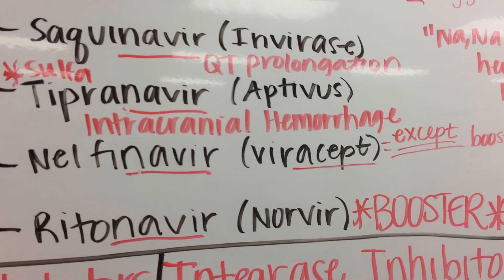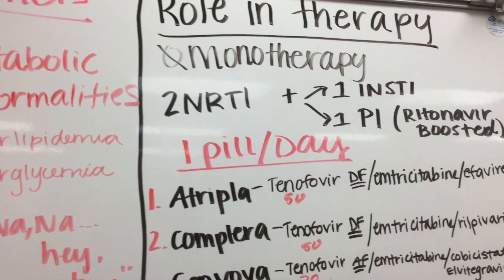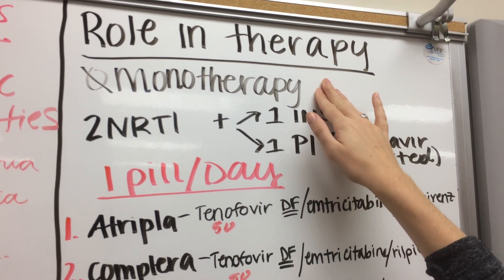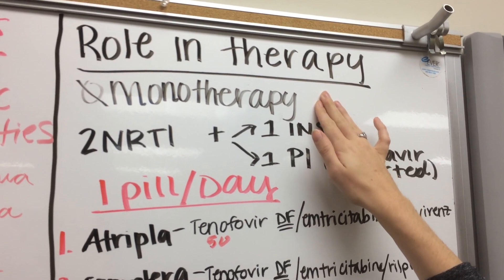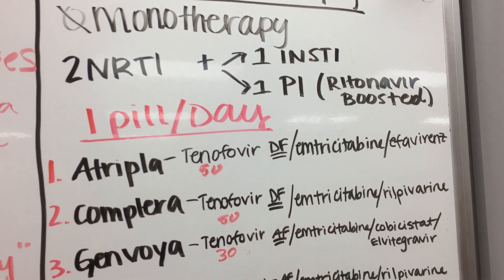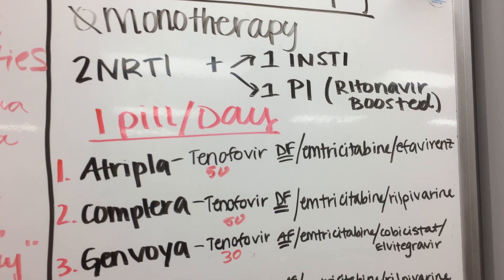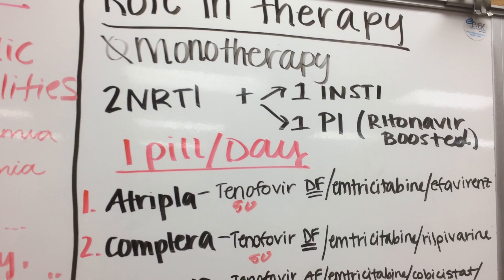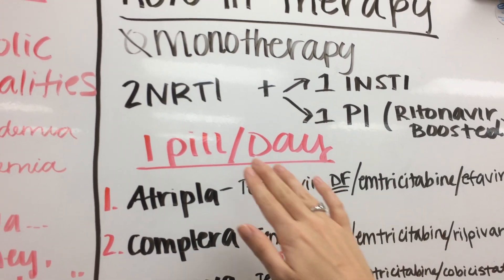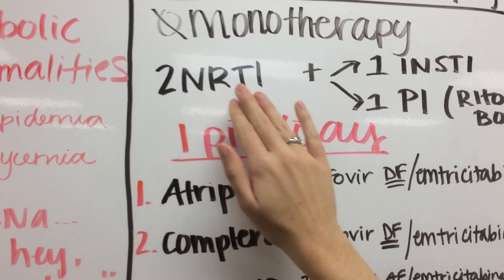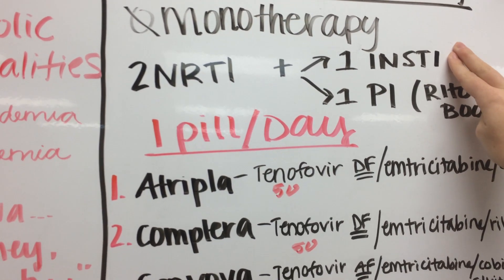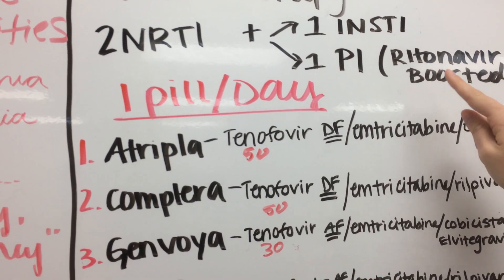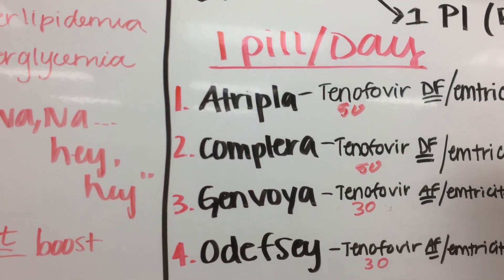Regarding the role in therapy — it's really important that we do not use monotherapy for HIV, as it is a very resistant infection. We want to use at least three different medications. We will not use NNRTIs or our entry inhibitors — specifically Maraviroc or Fuzeon — due to their side effect profiles. The preferred approach is two NRTIs plus either an integrase inhibitor or a protease inhibitor with a ritonavir boost.